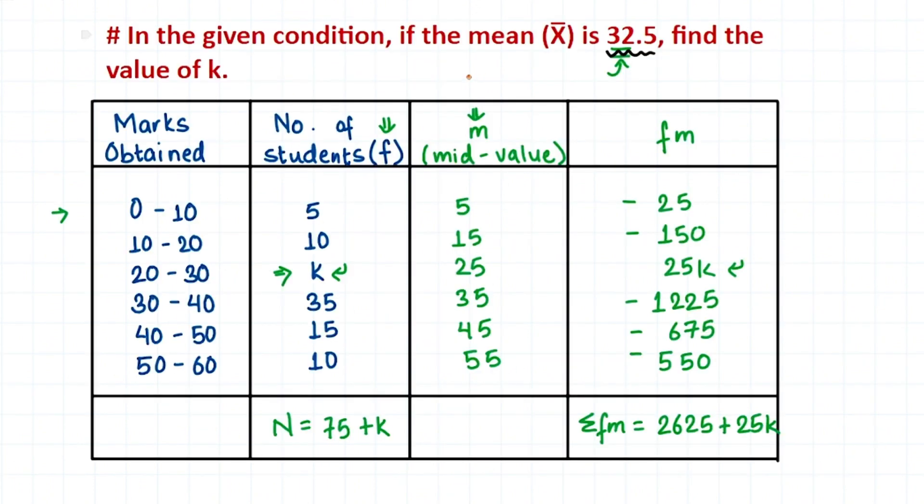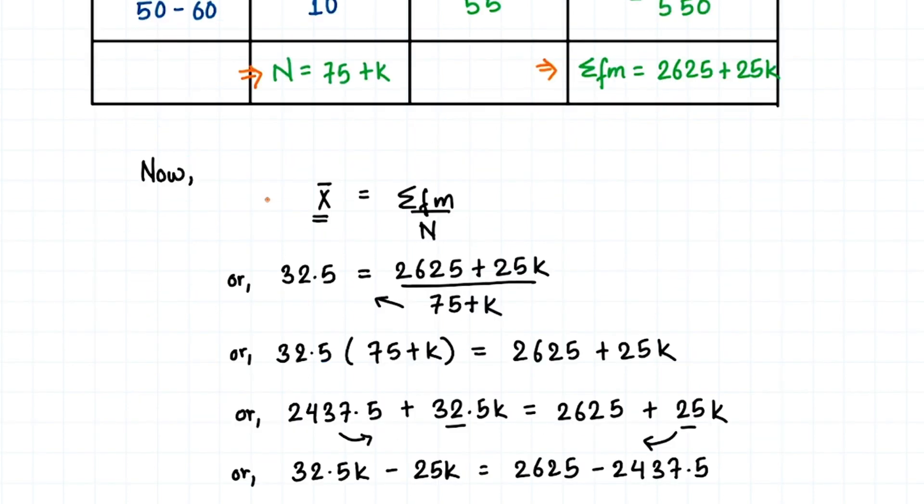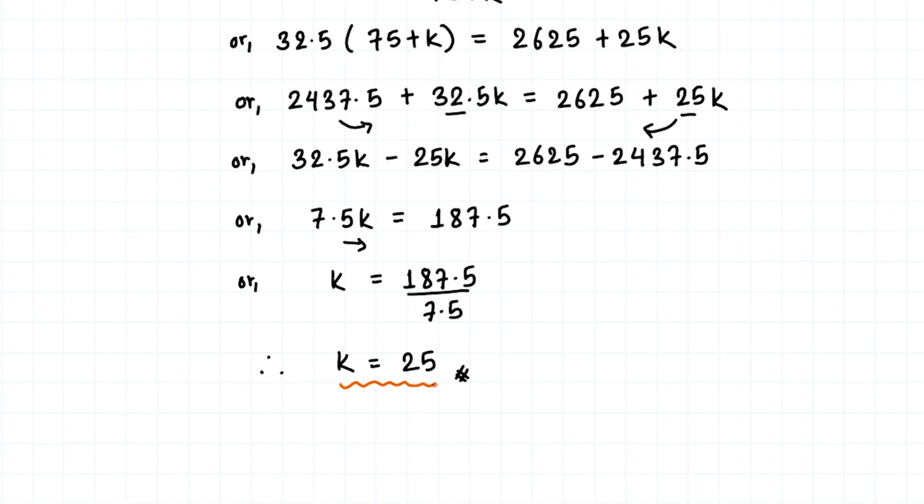To summarize, first we found the mid value or class mark for each class. Then we multiplied the mid value with the frequency to get fm. Adding these fm values gave us summation fm. Adding the frequencies gave us n, the number of items. Then we used the mean formula with the given mean value and solved the equation to find k. This is how we find missing frequency when the mean is given.